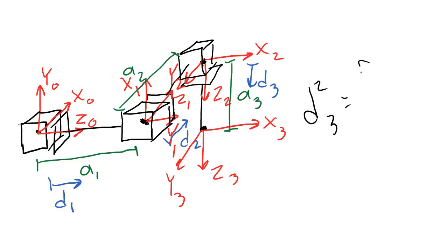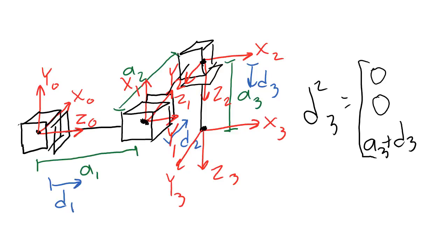Next, let's do d2,3. d2,3 is the displacement from the center of frame 2 to the center of frame 3. Right now, that displacement is 0 in the x2 direction, 0 in the y2 direction, and a3 plus d3 in the z2 direction. This will be true no matter what happens to d3. a3 is the distance between these two frames when d3 is 0, and d3 represents how much the joint has extended. So we've found these three displacement vectors and we're done with this example.